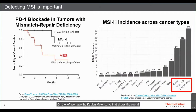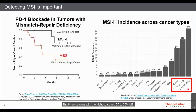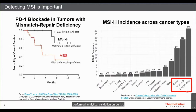A Kaplan-Meier curve shows that MSI-high patients treated with PD-L1 drugs have better overall survival than microsatellite stable patients. The three cancers with the highest MSI-high frequency — around 20 to 30 percent — are colon, stomach, and endometrial cancers. These are the three sample types on which we performed analytical validation of our kit.